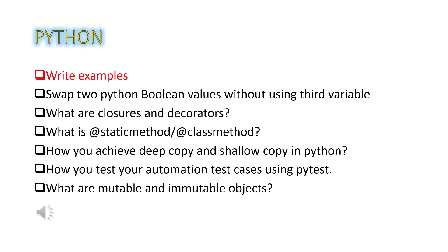All these Python questions require written examples. The first one is: compare boolean values without using a third variable — meaning swap true and false without a third variable. The second one is: what are closures and decorators? The third one is: what is @staticmethod and @classmethod?